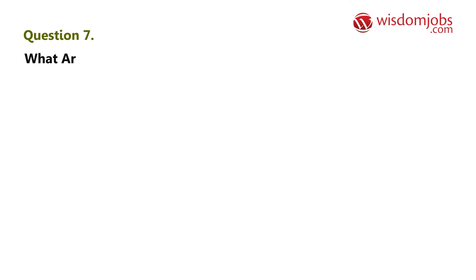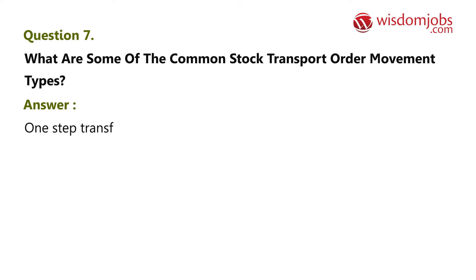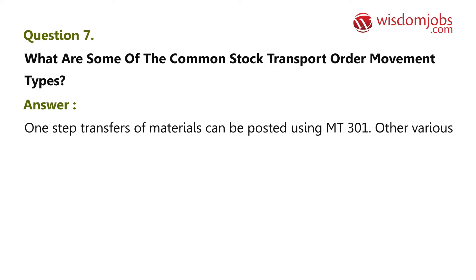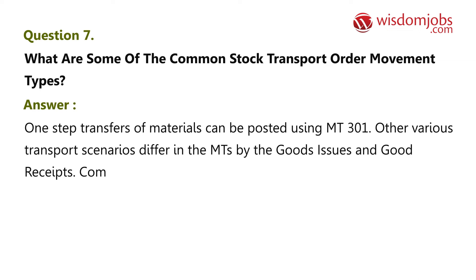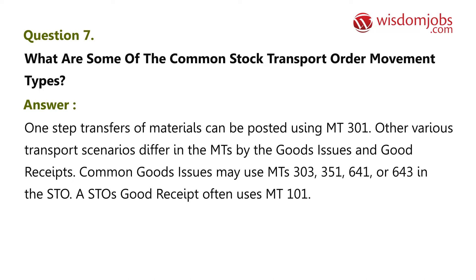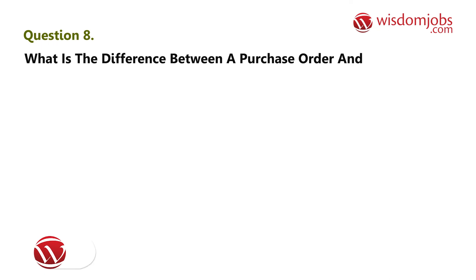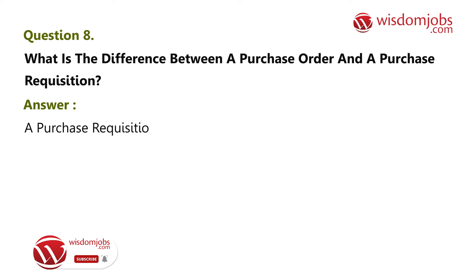Question 7: What are some of the common stock transport order movement types? Answer: One-step transfers of materials can be posted using MT 301. Other transport scenarios differ in movement types by the goods issues and goods receipts. Common goods issues may use MTs 303, 351, 641, or 643. In the store-to-store goods receipt, MT 101 is often used.